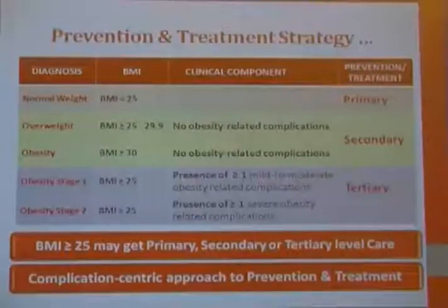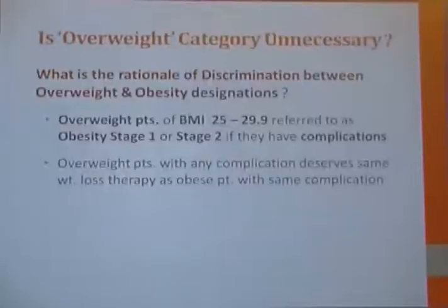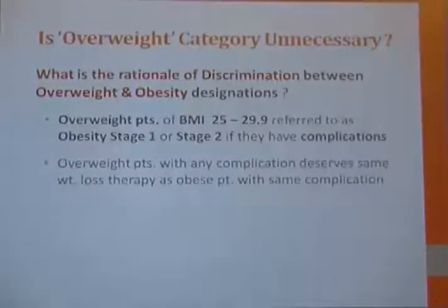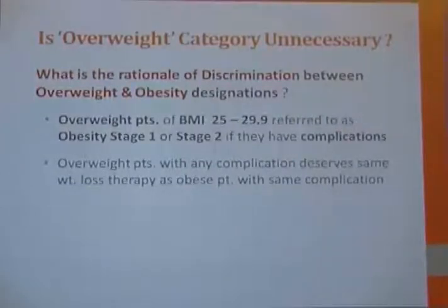Regarding the complication-centric approach to prevention and treatment — the secondary level covers both the overweight and the obesity group. The question arises: what is the use of keeping this overweight category? Is it redundant or unnecessary? The rationale for discrimination between overweight and obesity may not hold, since overweight patients with complications deserve the same weight loss therapy as obese patients with the same complications.